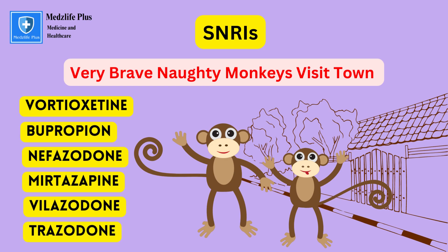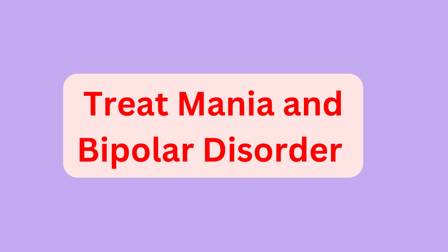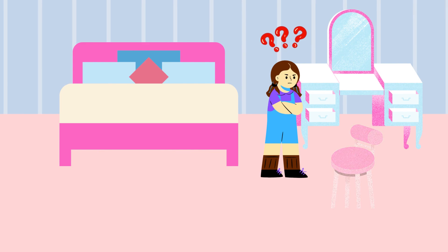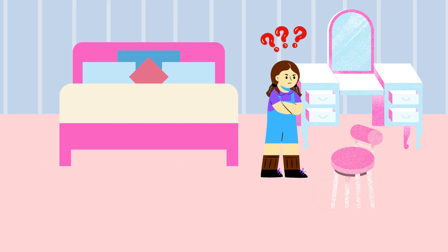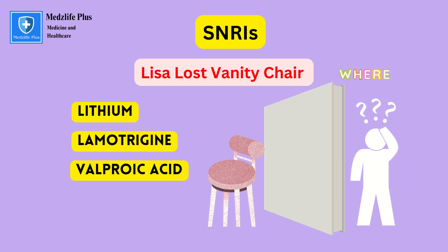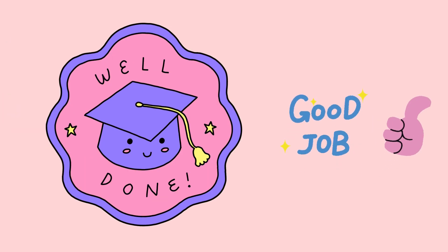Now we'll learn the drugs used to treat mania and bipolar disorder. In this picture we see an angry girl — let's call her Lisa. She's standing in front of her vanity looking for something she can't find: her vanity chair is missing. Our mnemonic is: Lisa Lost Vanity Chair. L for lithium, L for lamotrigine, V for valproic acid, C for carbamazepine.